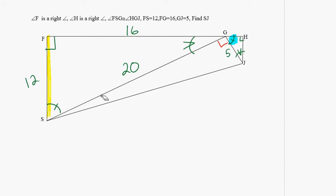So we did all of that thinking to justify why angle SGJ was a right angle. Now that we know it's a right angle, we can use the Pythagorean theorem on that green triangle.